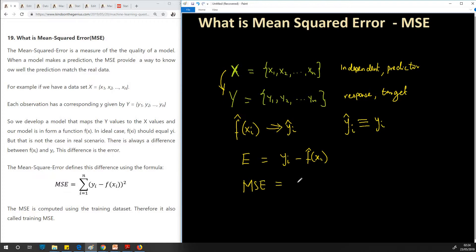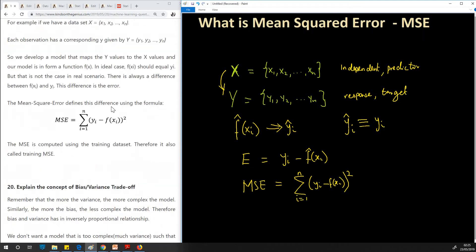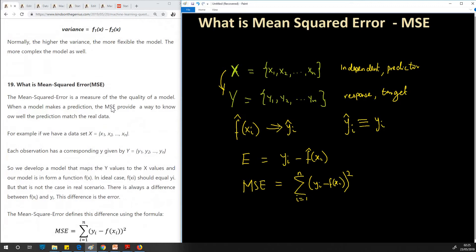The MSE will now be given by taking a total of all the errors. Sigma i equals one to n for all the data. So we are taking y_i minus f(x_i) and then we square it. So this is what is called the mean squared error.